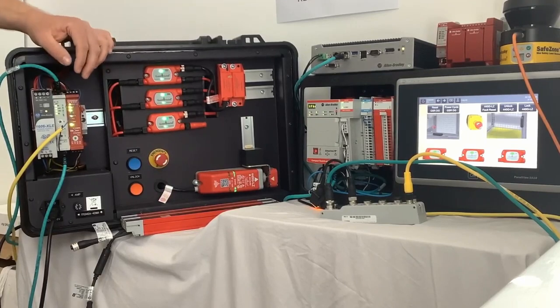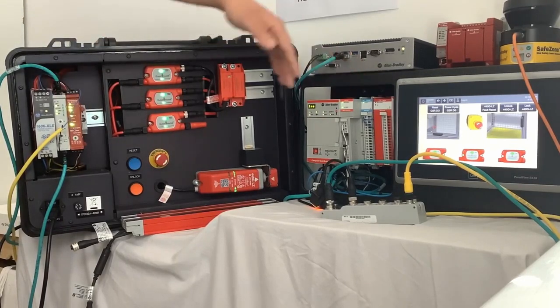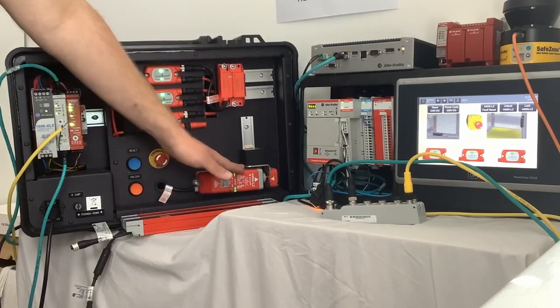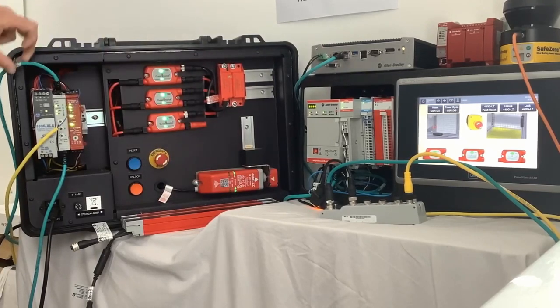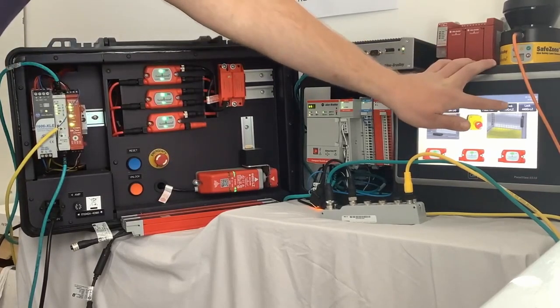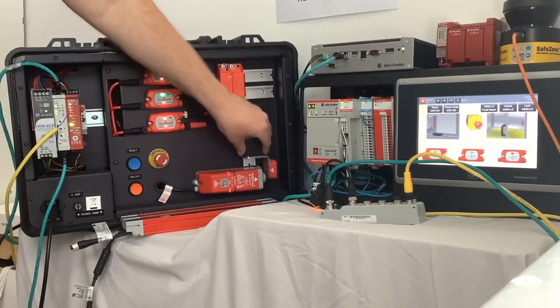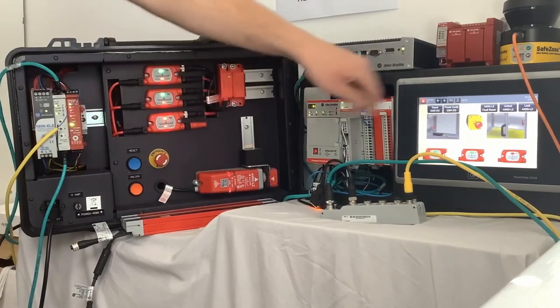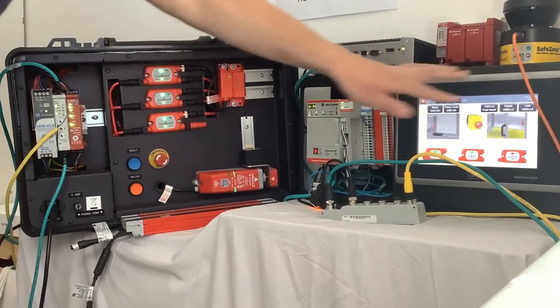The other thing it does, so I've got that going into this HMI here, and I've also got an LZ locking switch here. There's no additional wires, basically just the ethernet cable here. If I press unlock on the HMI, the LZ has now unlocked. If I press lock on the HMI, the LZ's locked.